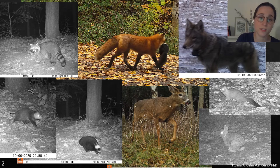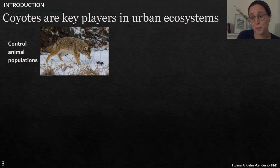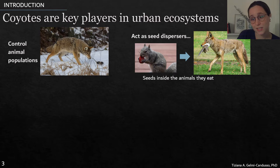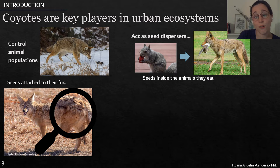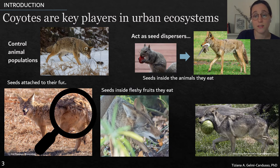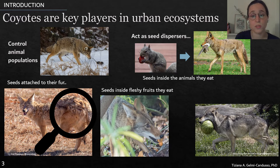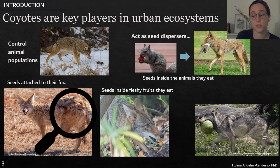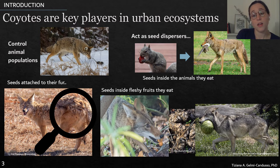Besides human-wildlife conflict, coyotes are also very important ecologically. As apex predators, they control animal populations. They also disperse seeds — inside the animals they eat, on their fur, and inside the fleshy fruits they eat. They are not strictly carnivorous; they are opportunistic, and they will eat fruits if they encounter them. When they eat them, they will disperse the seeds, mostly along natural areas.